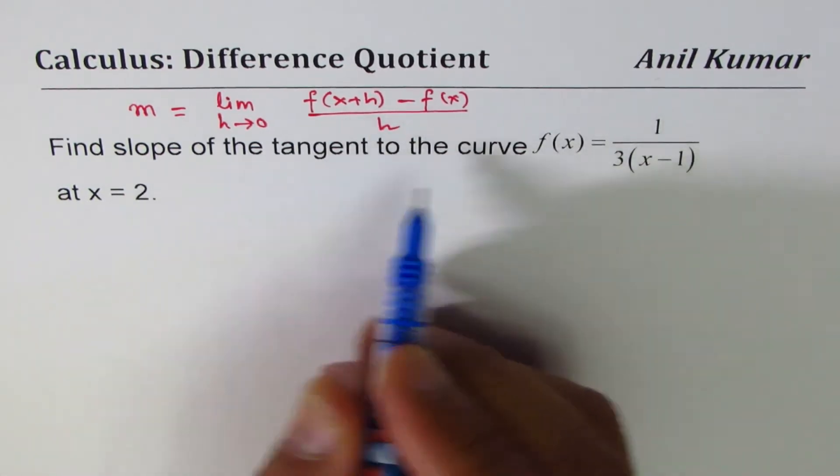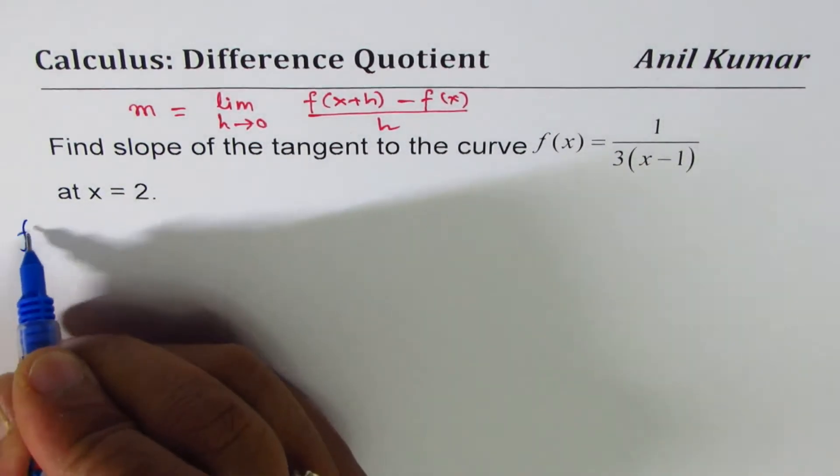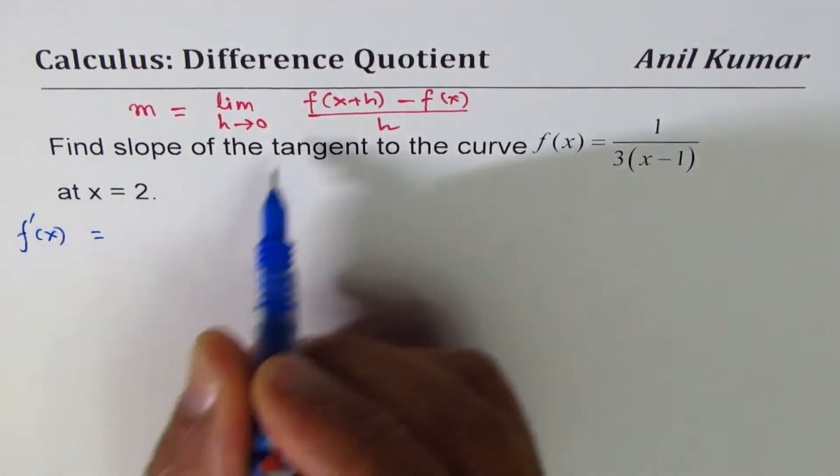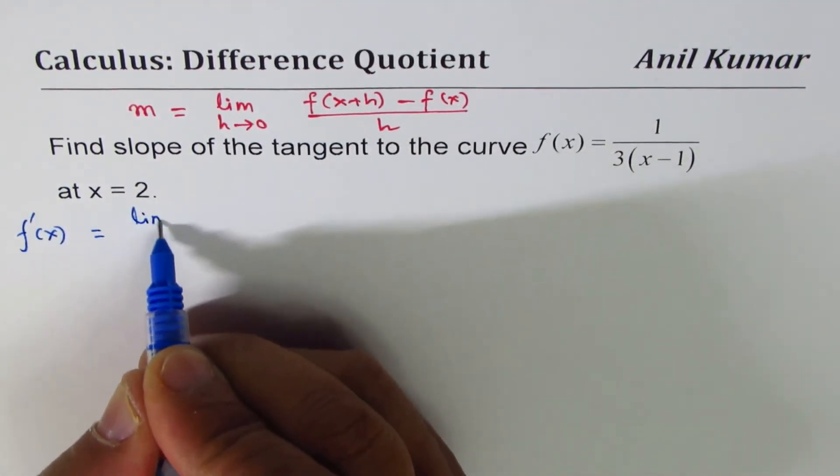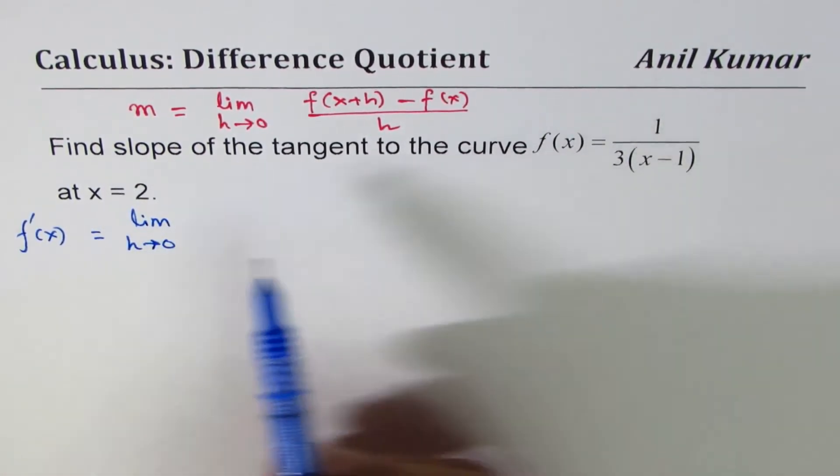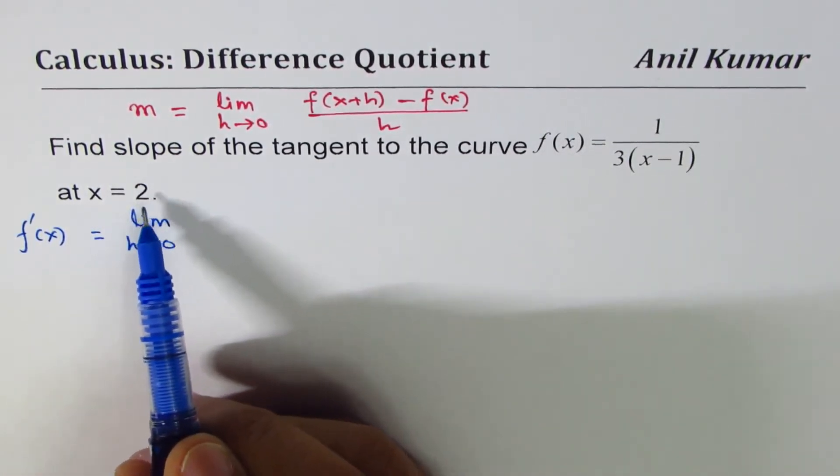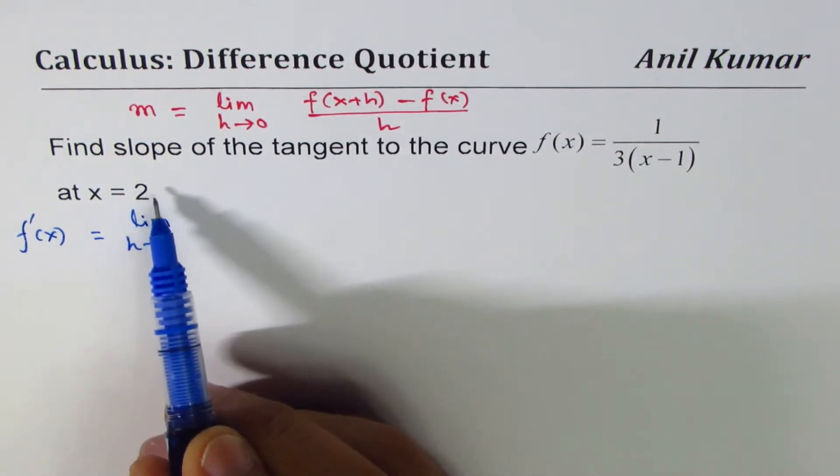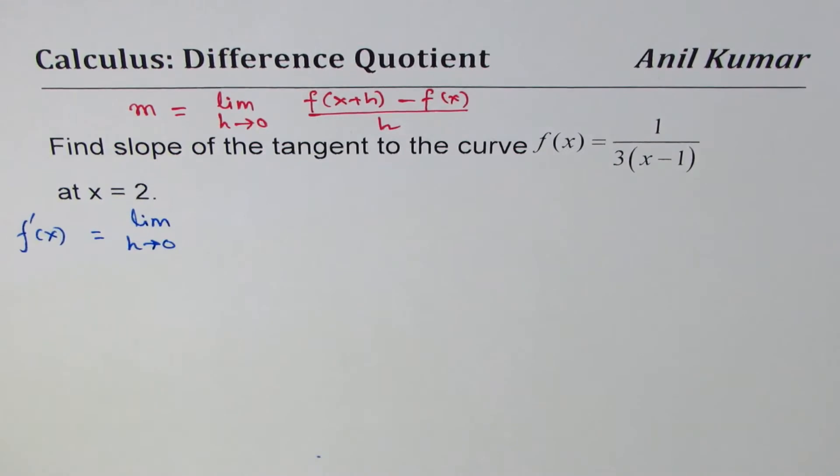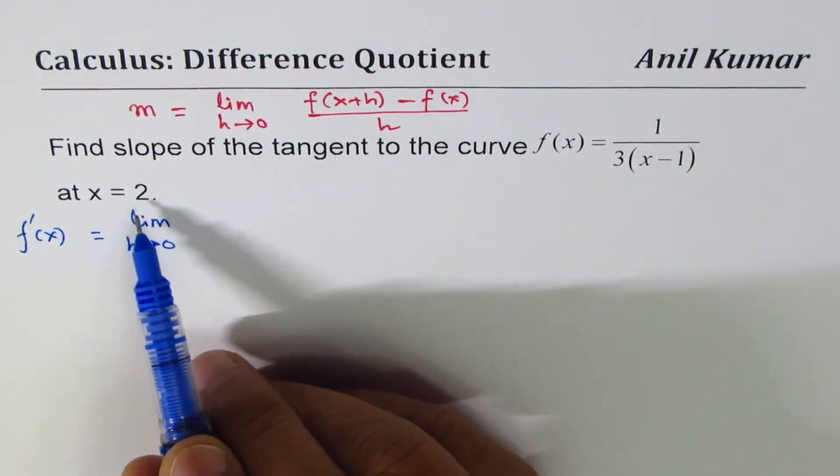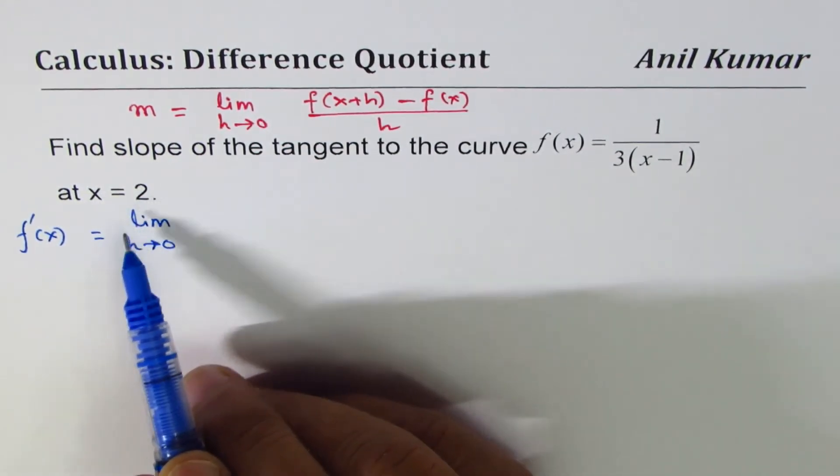We can write f'(x) as the slope instead of m in calculus, and we'll apply this formula. Limit h approaches 0. If 2 is a point, then the other point is very close to 2, we write this as 2+h, slightly away from 2. This is a general equation when x equals 2 type is not given to you.